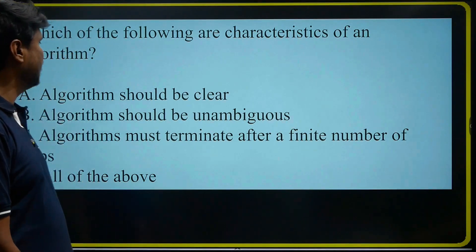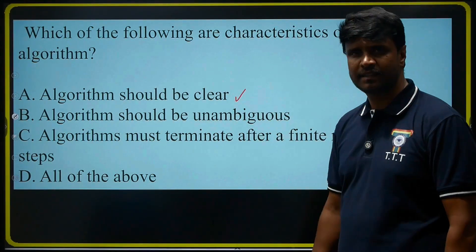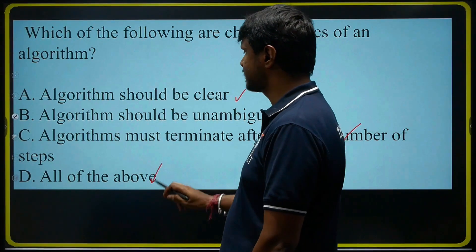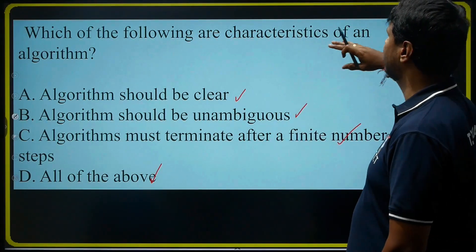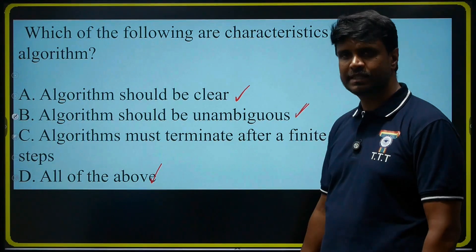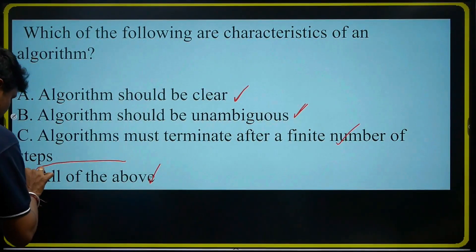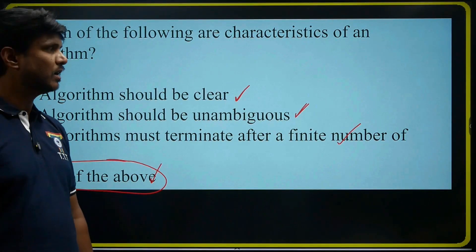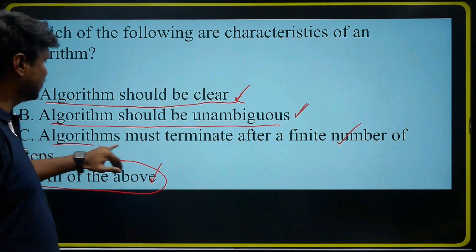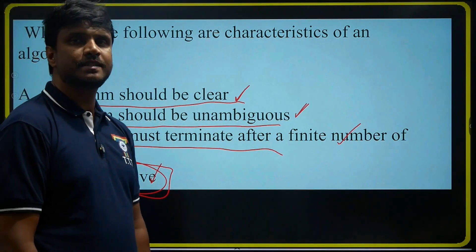Which of the following is a characteristic of an algorithm? We already discussed about this. The characteristics are: algorithm should be clear, algorithm should be unambiguous, and algorithm must terminate after a finite number of steps. The last option is all of the above. The correct answer is all of the above, because all three — clear, unambiguous, and finite steps — are characteristics of an algorithm.